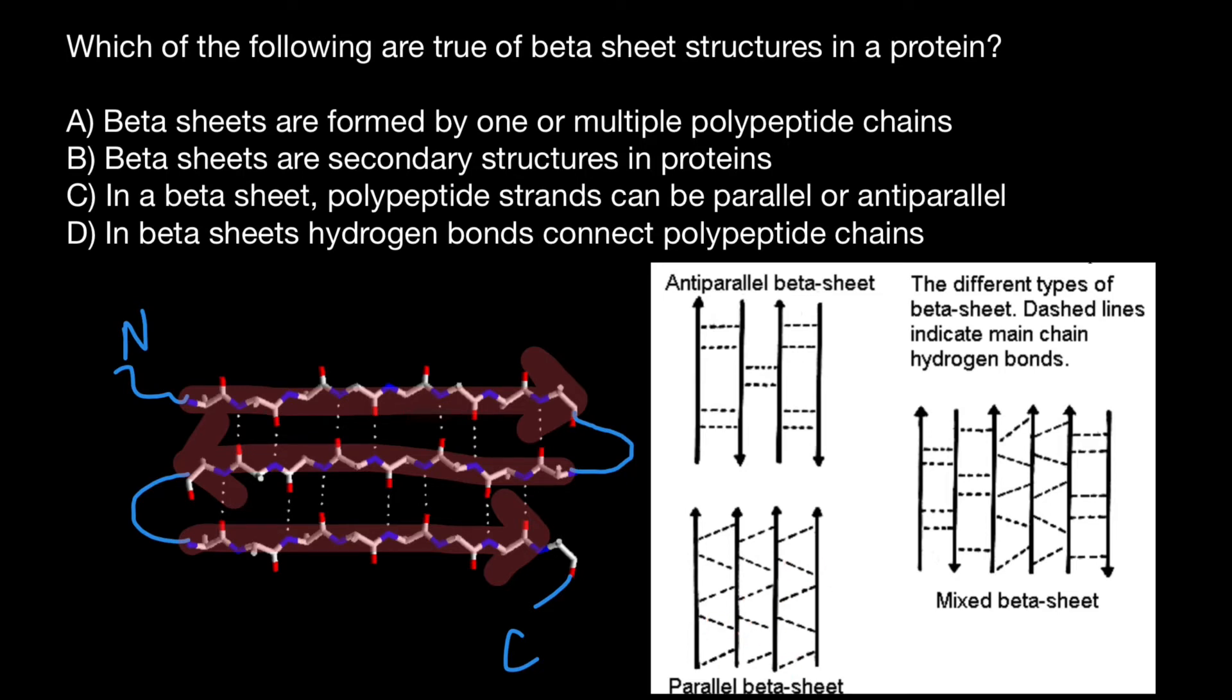Now let's add loops here. So we can add one loop here, another loop here, and another loop here. Now take a look what a pattern of loops are going to be in parallel beta sheet.